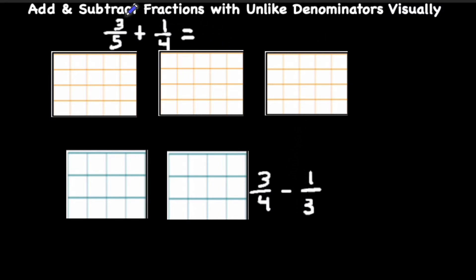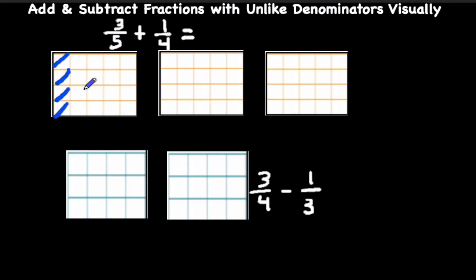Let's take a look at the first fraction: 3 out of 5, or 3 fifths. This tells us we need to shade in 3 out of 5 sections, and we're going to do that vertically because we have 5 sections going vertically. So we have 1, 2, 3, 4, 5 — and we're going to shade in 3 out of those 5 sections.